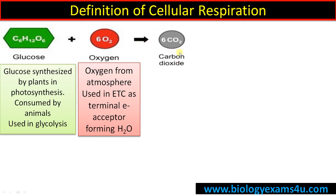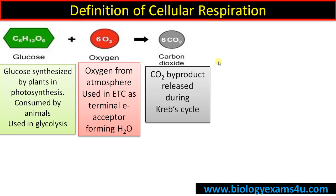This oxidation gives rise to carbon dioxide as a product. Carbon dioxide is a byproduct that is released during the Krebs cycle of cellular respiration, and it is used by plants for photosynthesis.